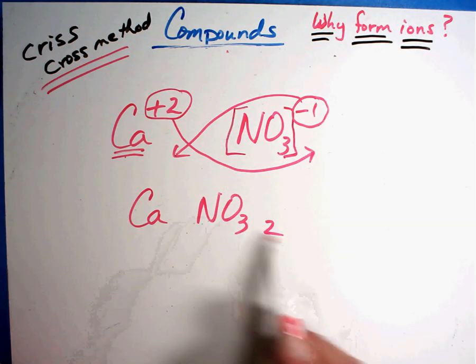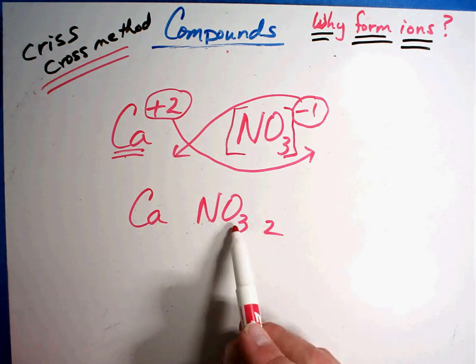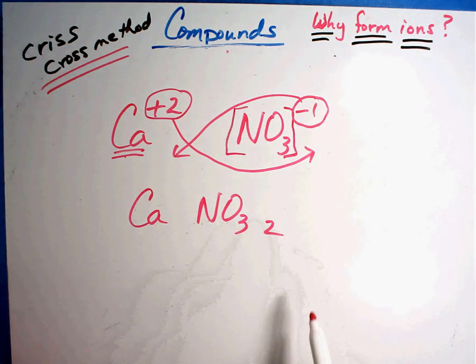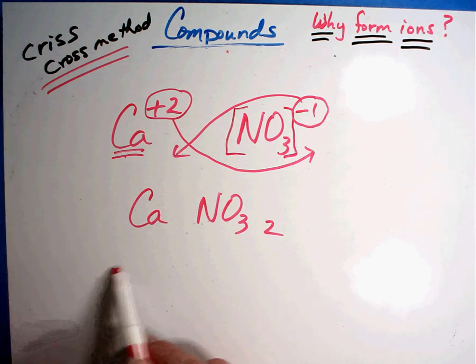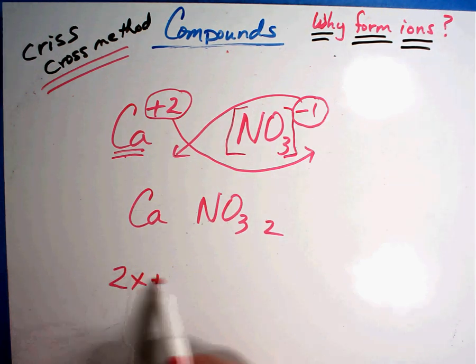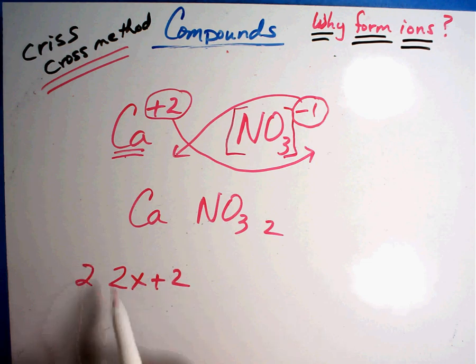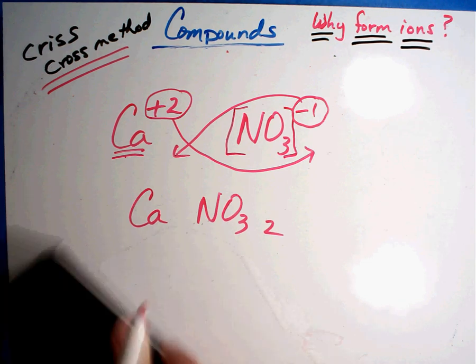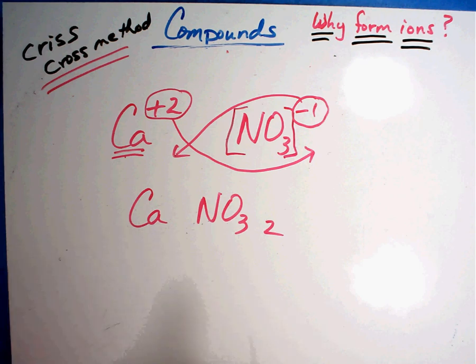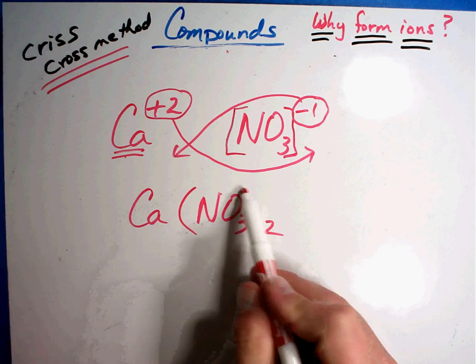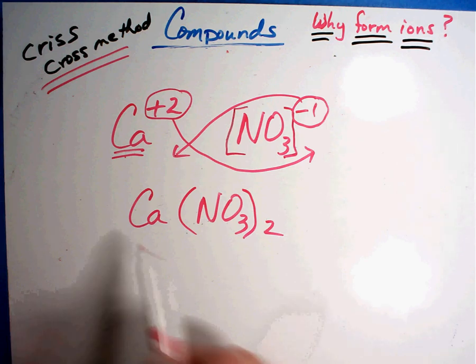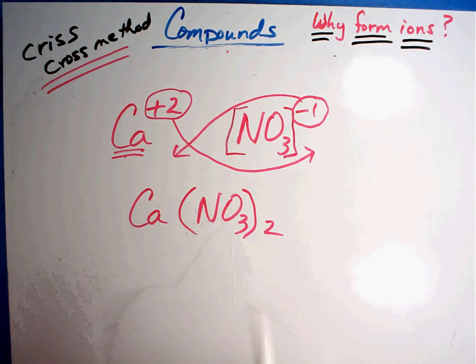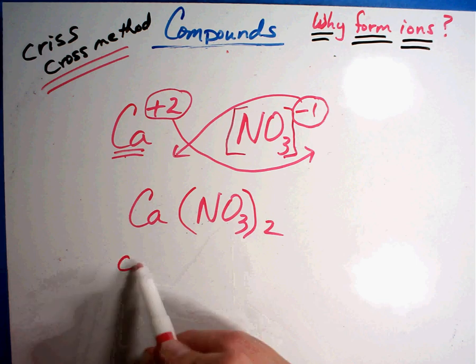It doesn't matter what this is. All you're looking at is the charges. Do they equal zero? No. What do you do if they don't equal? Switch them. Ca 1, NO₃ is going to have the 2. Now it's not NO₃₂. It's NO₃ with an extra 2. Well, if you remember from math class, whenever you have something like this and you have a number out front to set it off, you put it in parentheses. So that's what we're going to do here. Calcium nitrate.